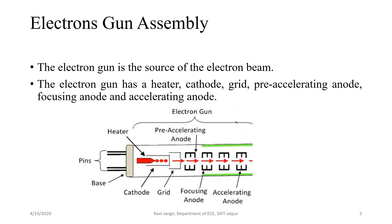The electron gun is the source of electron beam. The electron gun has a heater, cathode, grid, pre-accelerating anode, focusing anode, and accelerating anode.